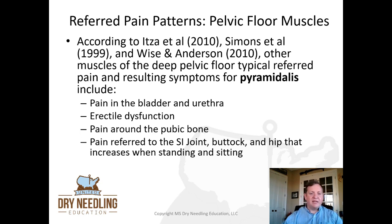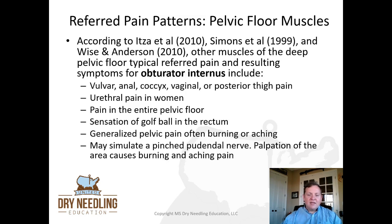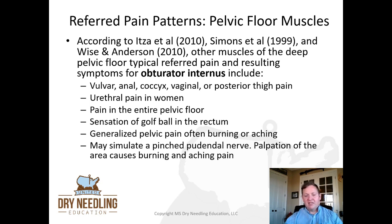For pyramidalis: pain in the bladder and the urethra, erectile dysfunction, pain around the pubic bone, pain referred to the SI joint, the buttock, and the hip that increases when standing or sitting. And for obturator internus — essentially everything: vulvar, anal, coccyx, vaginal, posterior thigh pain, urethral pain in women, pain in the entire pelvic floor, sensation of a golf ball in the rectum, generalized pelvic pain that's often burning or aching, and it may simulate a pinched pudendal nerve. Palpation of the area causes burning and aching pain because of the orientation of the pudendal nerve in Alcock's Canal and how obturator internus is implicated in that area. Obturator internus refers pain to almost everywhere.